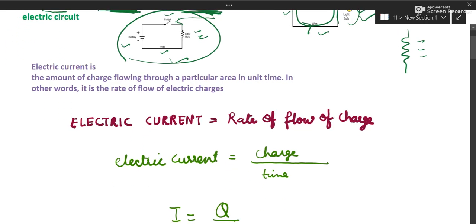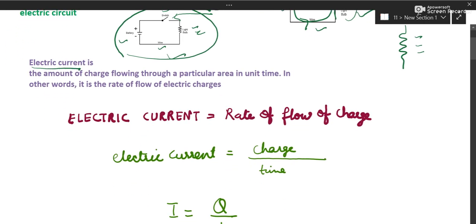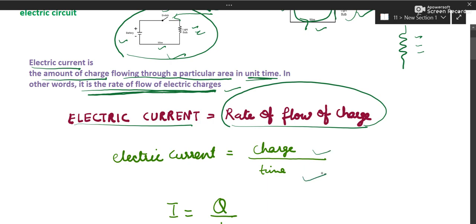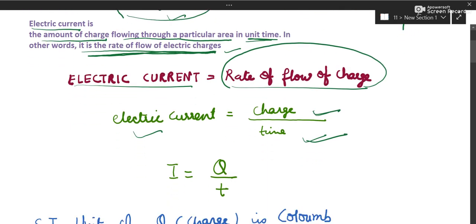The next topic is electric current. Electric current is the amount of charge flowing through a particular area in a given time — in other words, it is the rate of flow of electric charges. The meaning of rate of flow is how fast charges are flowing, which is charge upon time. So electric current equals charge divided by time.